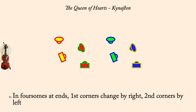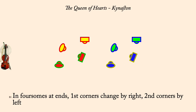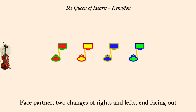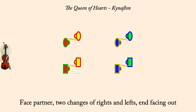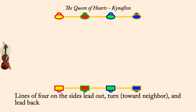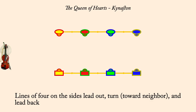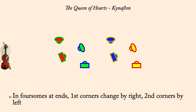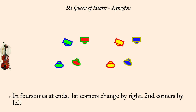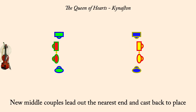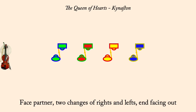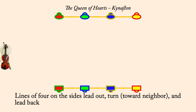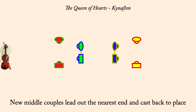First corners change by right, second by left. New middles lead out nearest end and cast back. Two changes of rights and lefts, end facing out. Lines of four lead out, turn, lead back. Ones cast to bottom as others set and lead up. First corners change by right, second by left. New middles lead out nearest end and cast back. Two changes of rights and lefts, end facing out. Lines of four lead out, turn, lead back. New middles lead out nearest end and cast back.